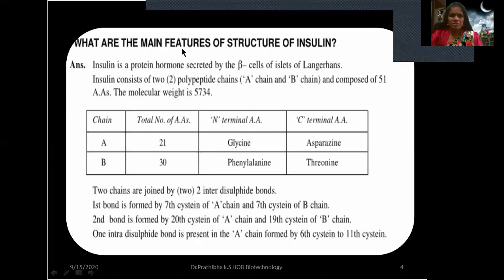The next question: What are the main features of the structure of insulin? Insulin is a protein hormone secreted by the beta cells of the islets of Langerhans. Insulin consists of two polypeptide chains: one known as A-chain and the other as B-chain, composed of a total of 51 amino acids with a molecular weight of 5734 daltons. The A-chain has 21 amino acids and the B-chain has 30 amino acids.